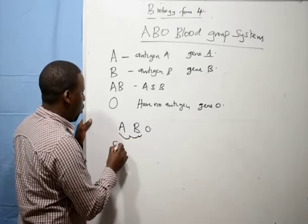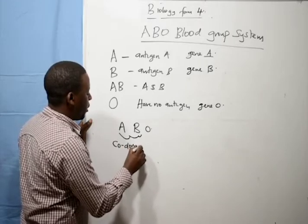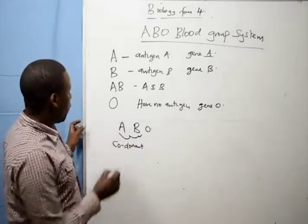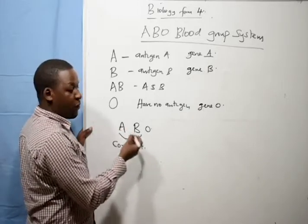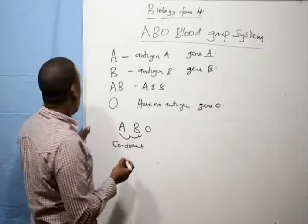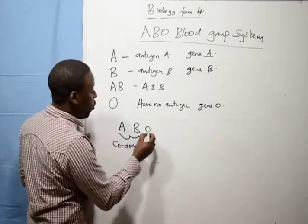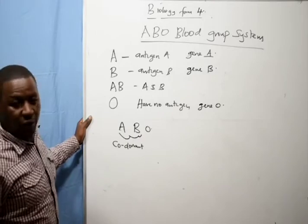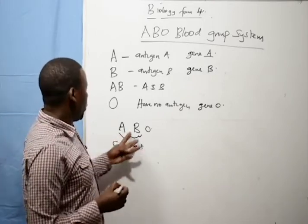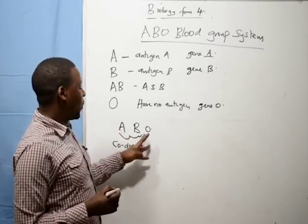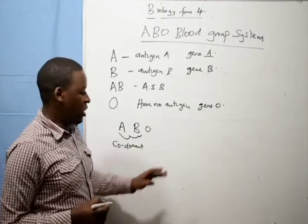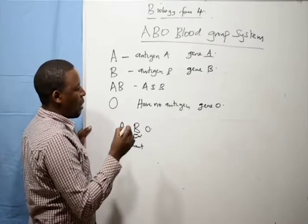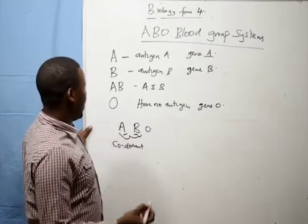Gene A and gene B are codominant, meaning they show incomplete dominance. Gene O is recessive. Therefore, we have two dominant genes and one recessive gene. When gene A and gene B are both present, both are expressed.